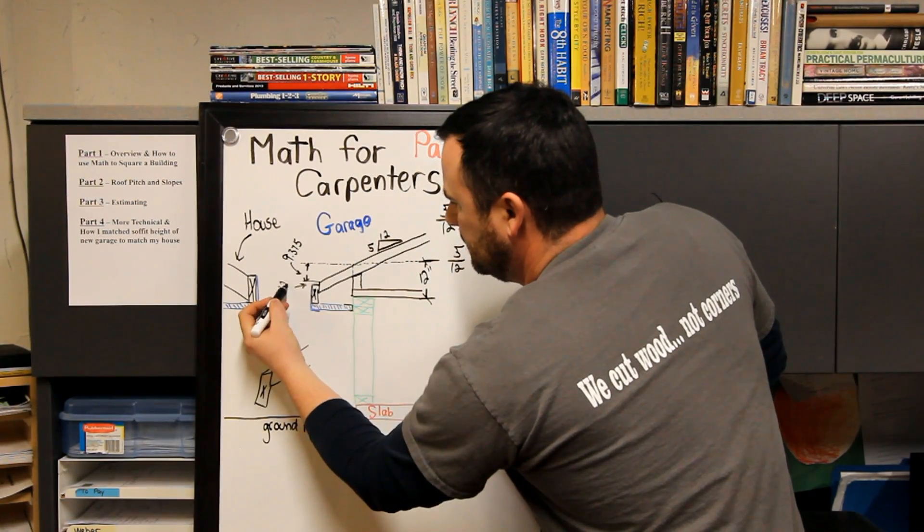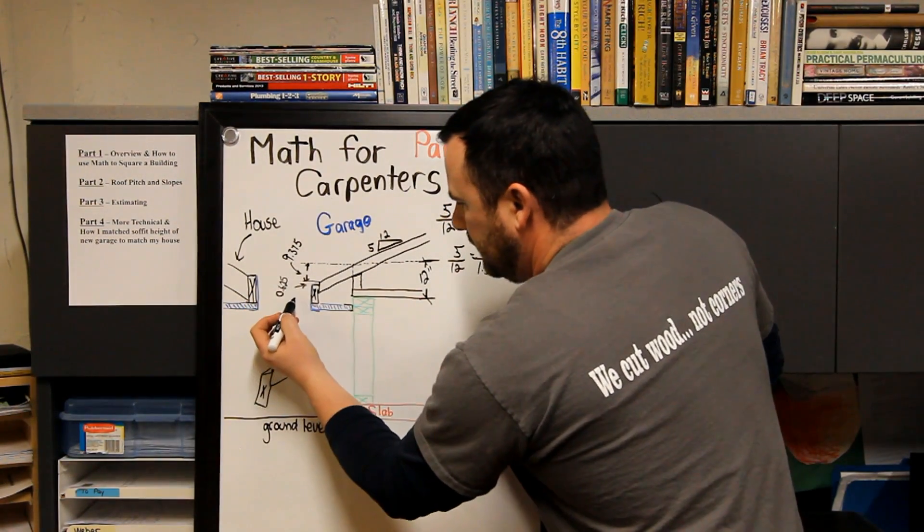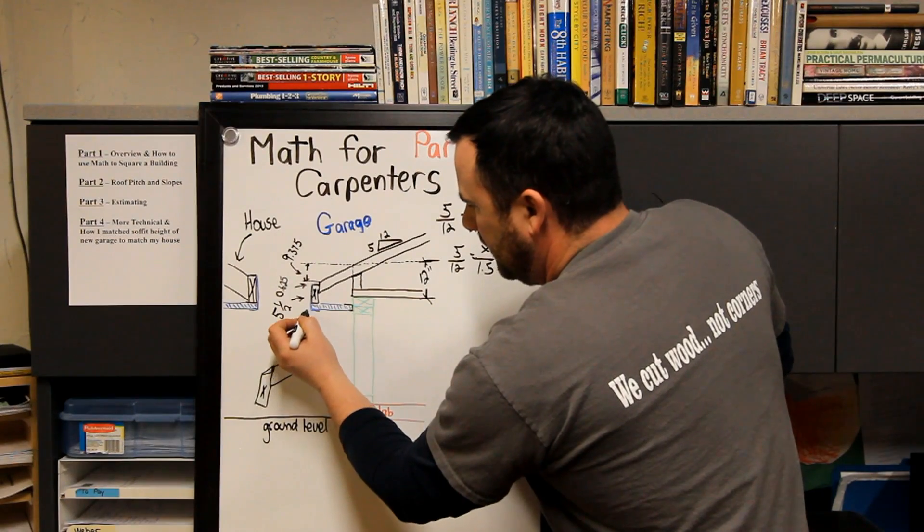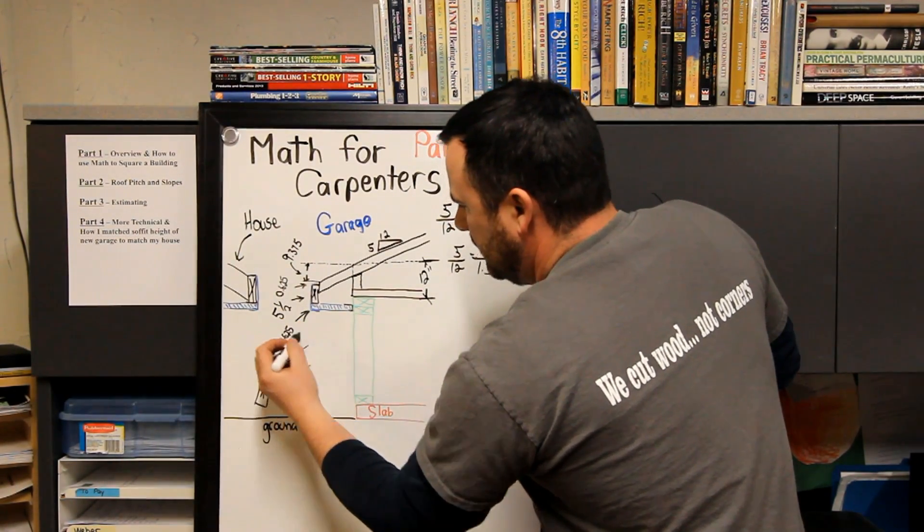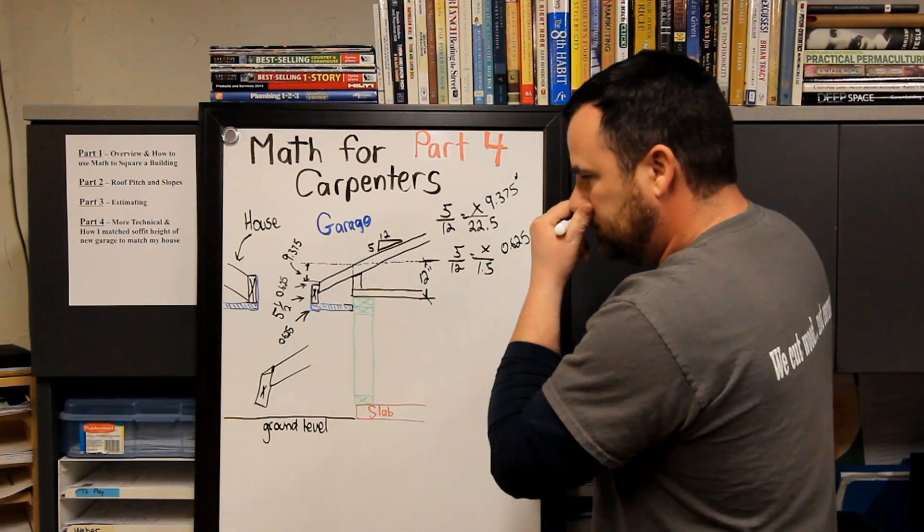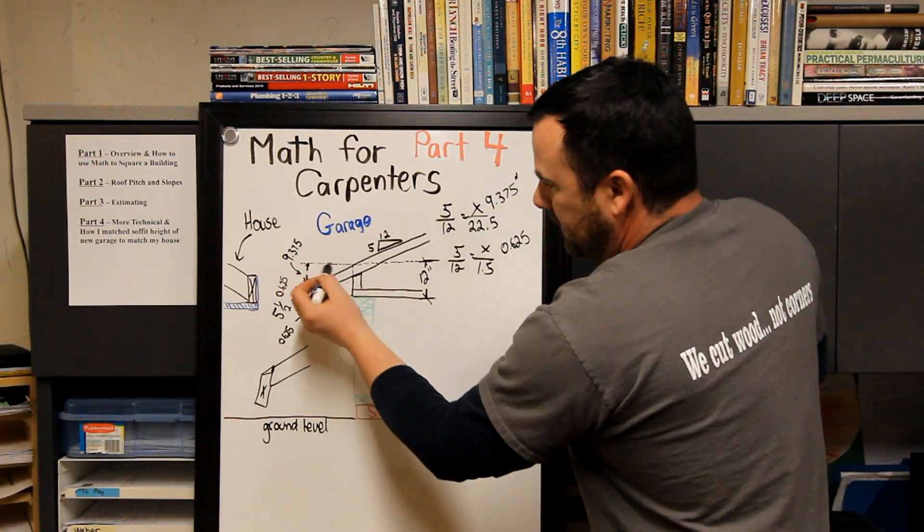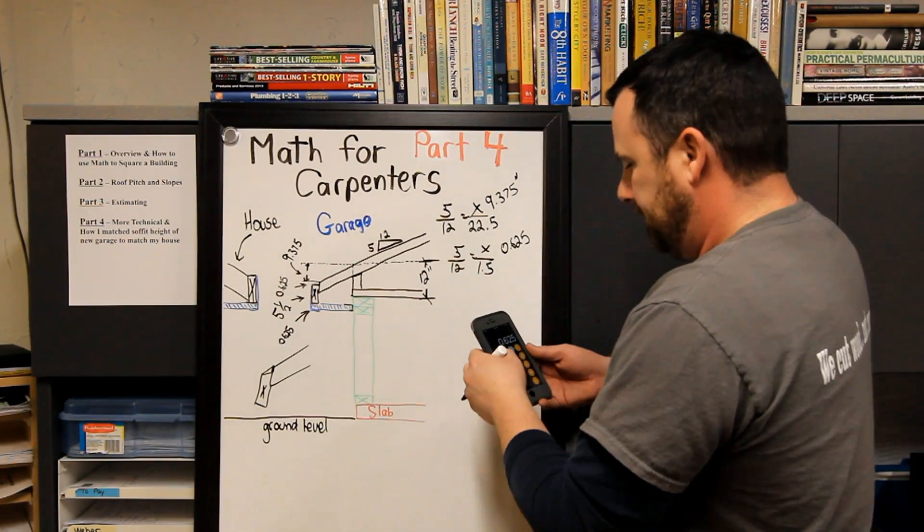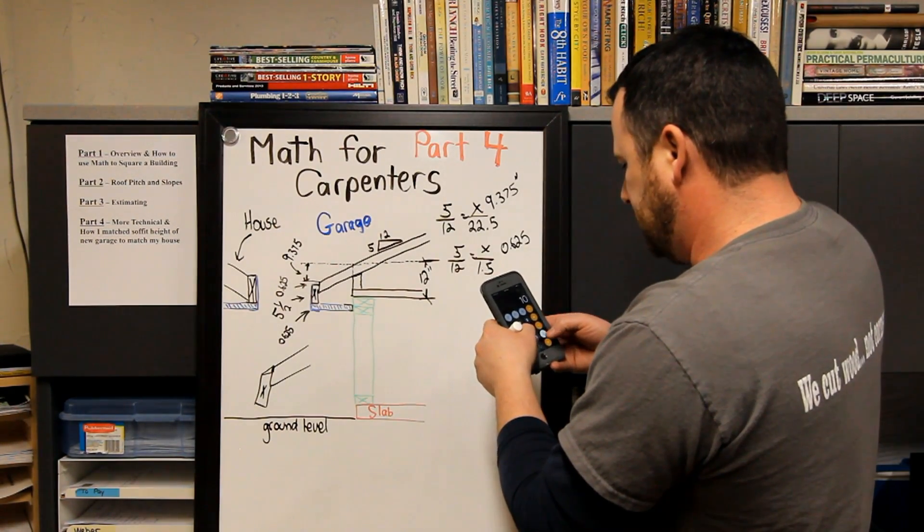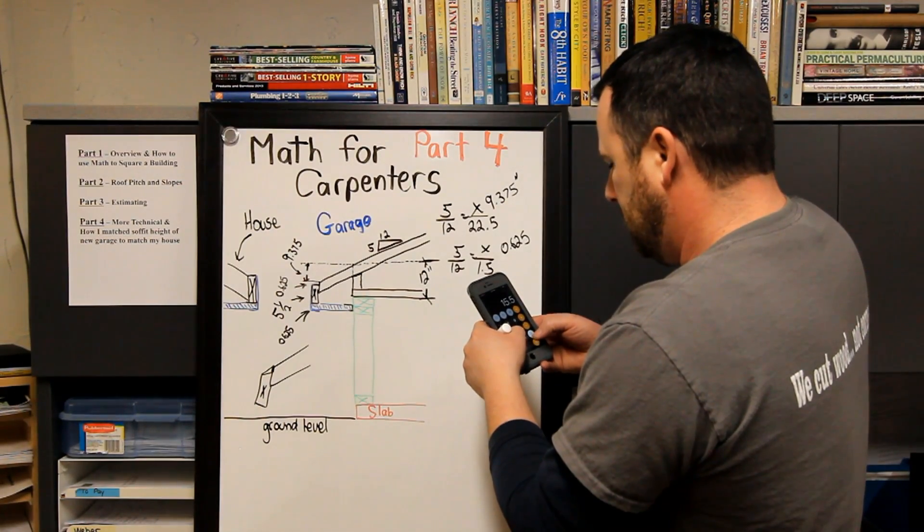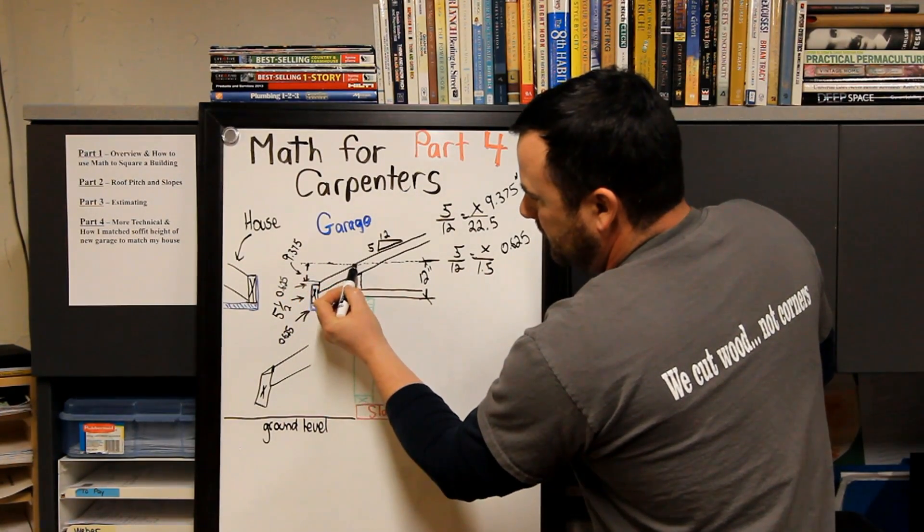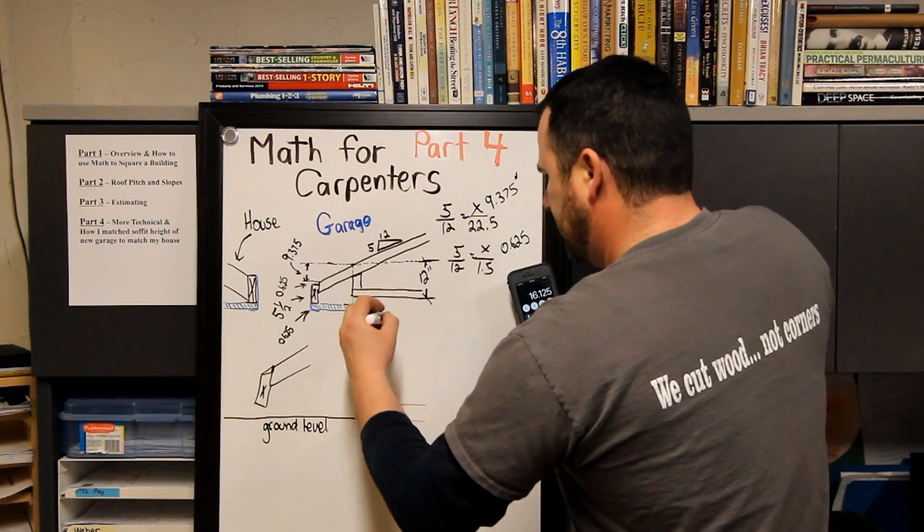Then I factor in 5.5 inches for 2x6 wood fascia, and then I factor in another 0.625, which is typically your soffit, or for sure your J-trim over on here is 5/8 of an inch. So I want to figure out the total drop from the top to the bottom of my soffit. So I got to add up all these numbers: 9.375 plus 0.625 plus 5.5 plus 0.625 equals...